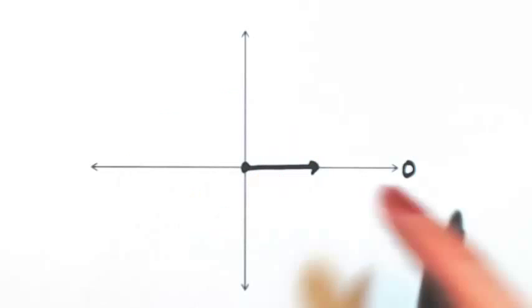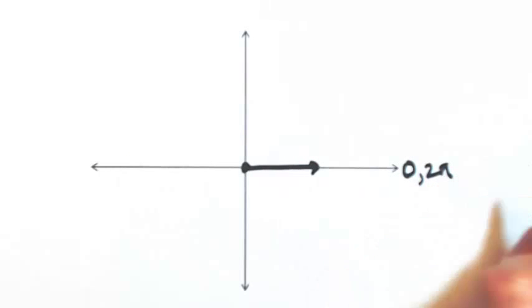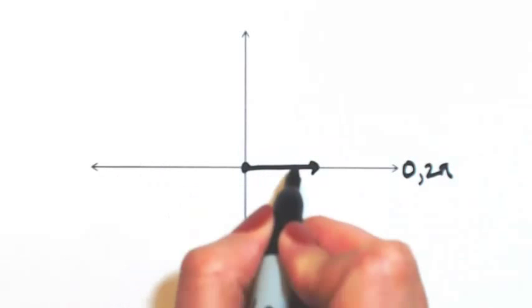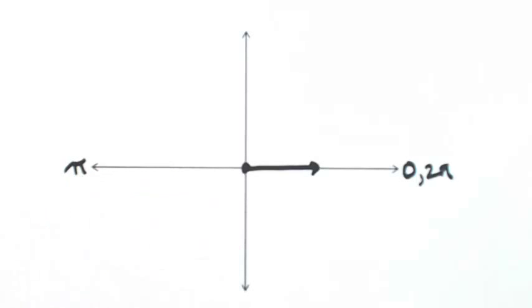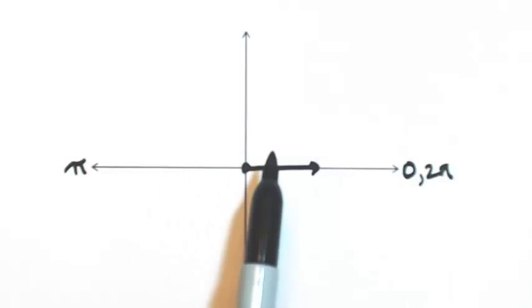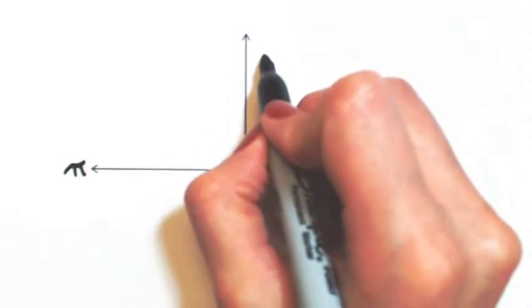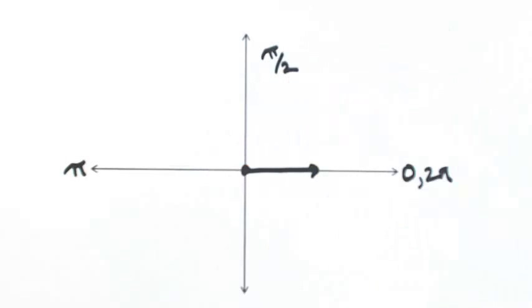Now if we just saw a moment ago, a full revolution is 2 pi radians. And then if we just saw a moment ago, if I go half of that, that would be 1 pi. So then between 0 and pi, half of that would be a half of a pi. And then between 1 pi and 2 pi would be 1 and a half pi.